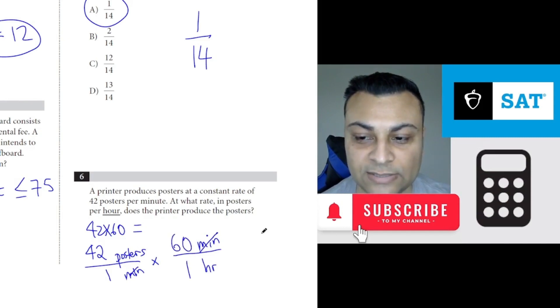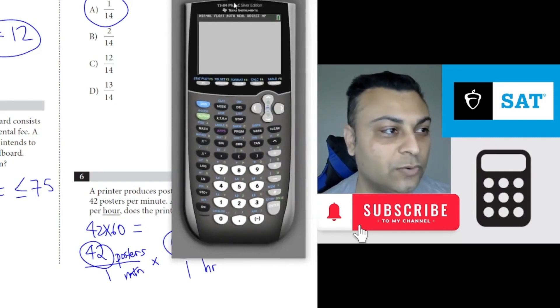That's why it's 42 times 60 instead of dividing by 60. In any case, 42 times 60, we just grab the calculator and we go 42 times 60.